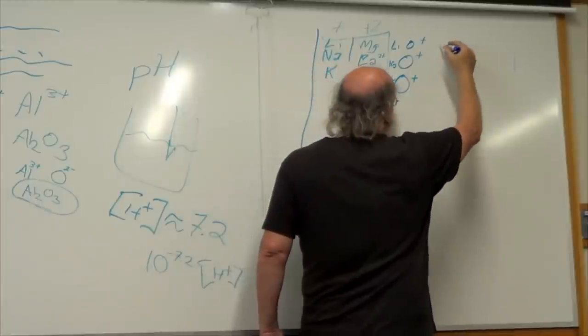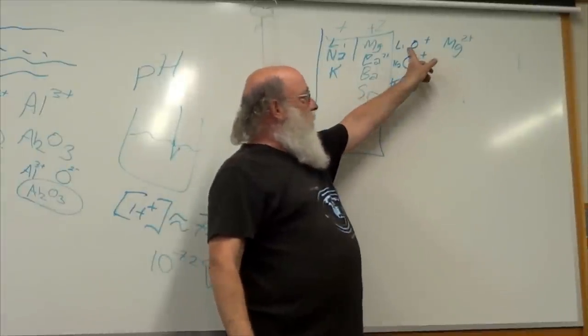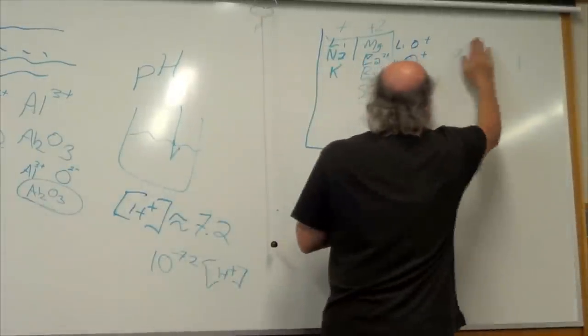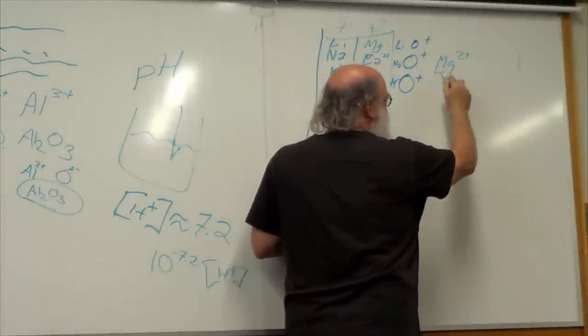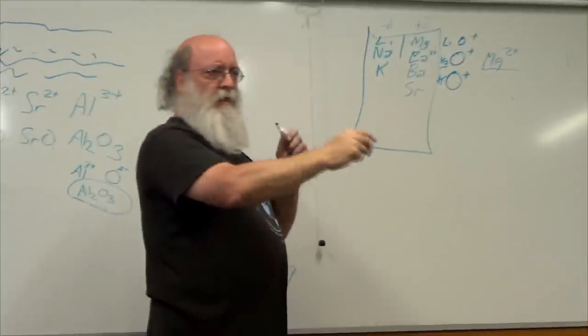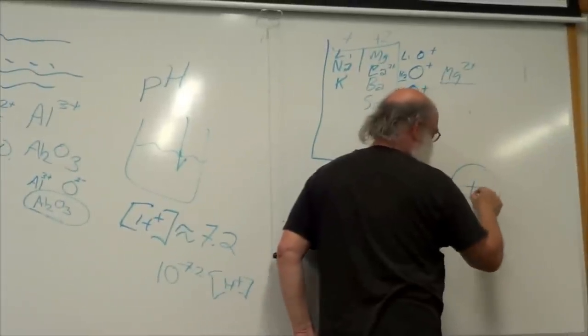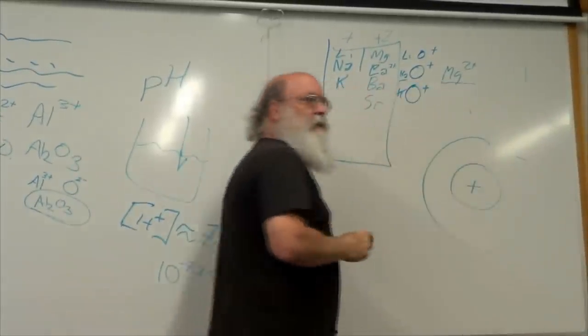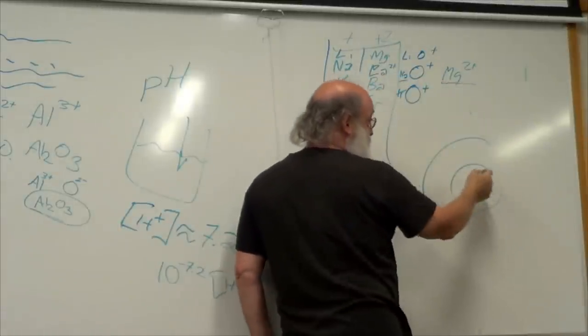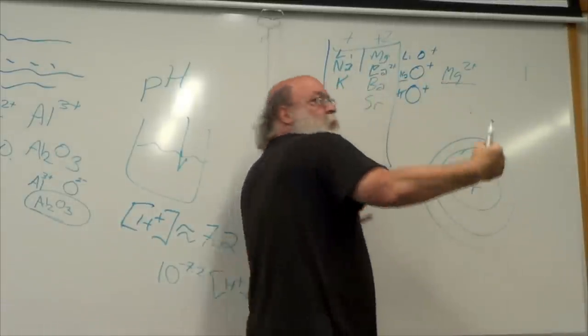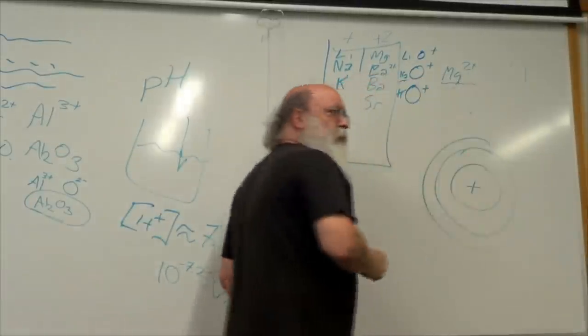Magnesium with a two-plus charge is actually smaller than sodium even though it should be on sodium's row. When you have two positive charges, all the remaining electrons are pulled tighter into the nucleus. So even though you might think magnesium is bigger, it's actually smaller than sodium.